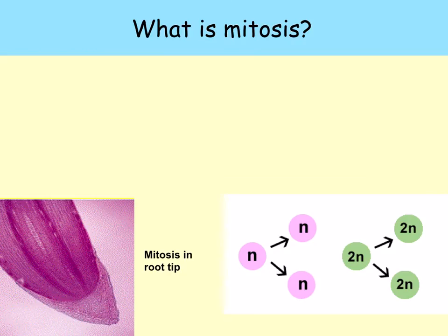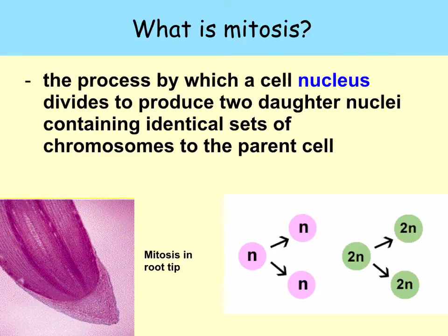Let's have a look at the definition of mitosis more carefully. It's the process by which a cell nucleus divides to produce two daughter nuclei containing identical sets of chromosomes to the parent cell. And where would you find mitosis occurring? You'd see it in the root tip, where the cells are actively dividing.